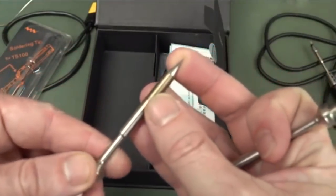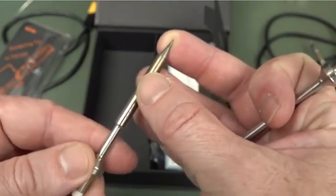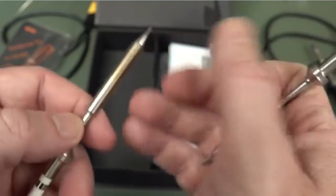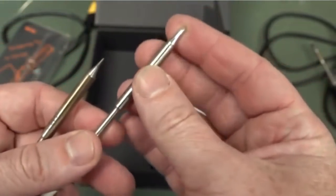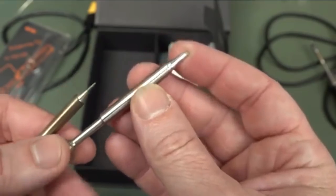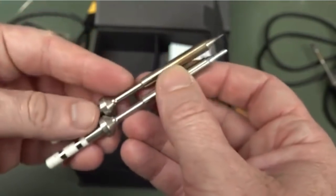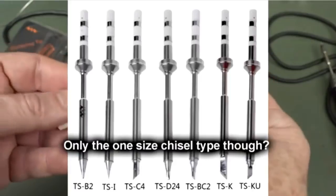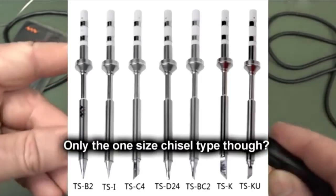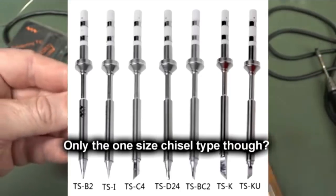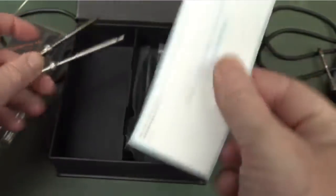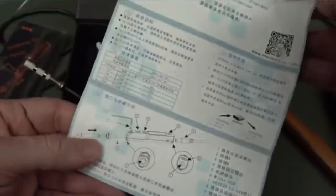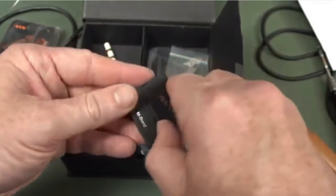In the box, the standard tip is the fine point conical like that, which I do not like. It's okay if you're doing really small SMD work, but out in the field you want something bigger. We've got a well tip like this, great for SMD drag soldering, but not really the same as the chisel tip that I got for the TS80. But the TS100 has a huge range of tips available.